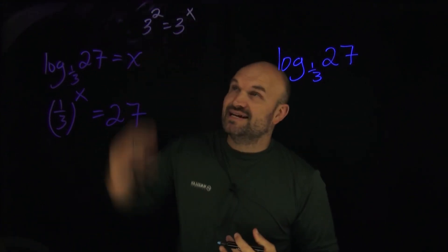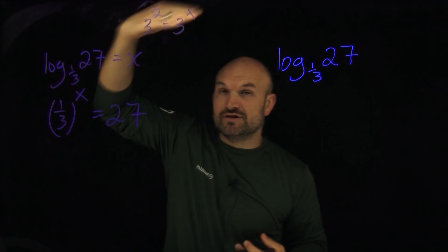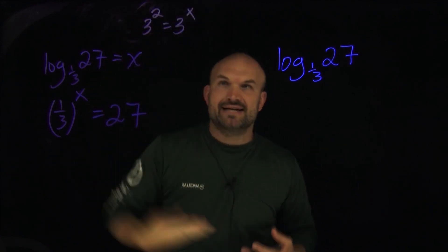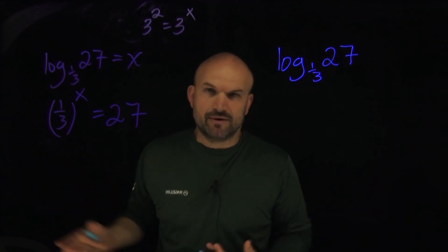And if you remember the one-to-one property, it basically says if you have the base the same, then the powers are going to be set equal to each other. And that makes sense. If I have three squared equals three to the x, then what is the only number that makes sense for x to equal? It's two.